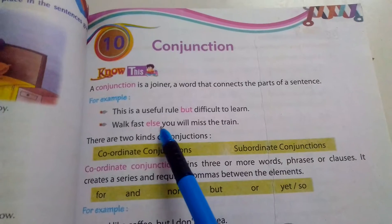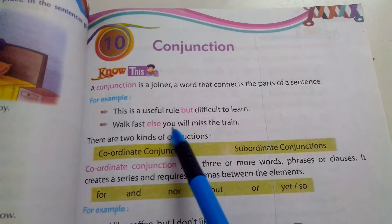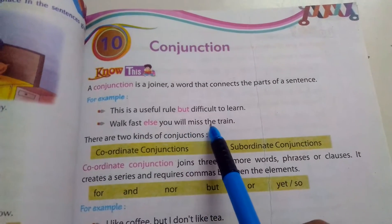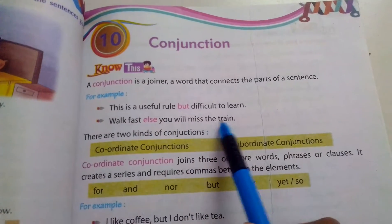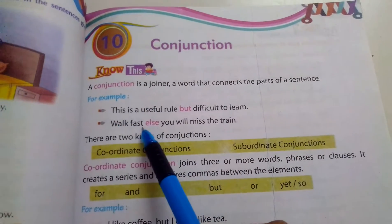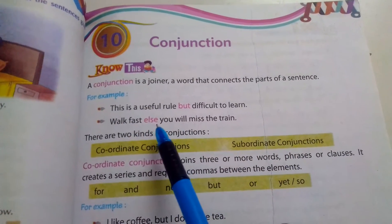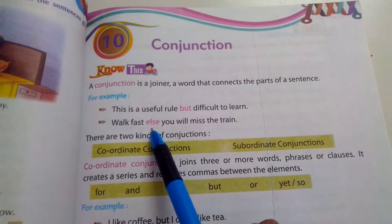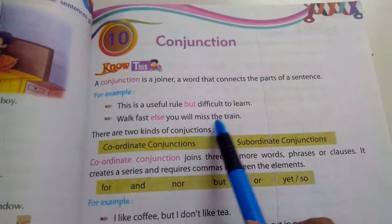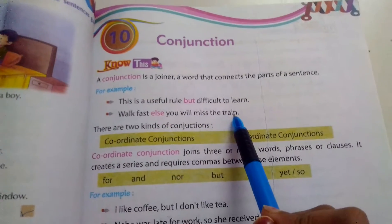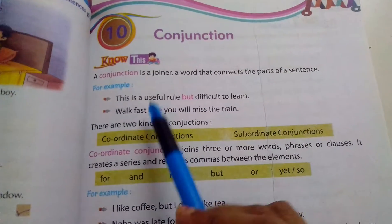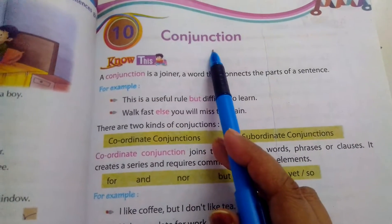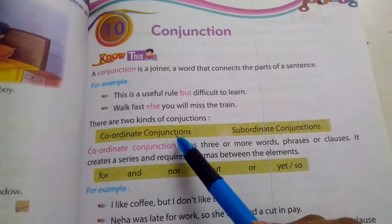Walk fast, else you will miss the train. Jaldi bhaago, nahi toh — 'else' matlab nahi toh — wali train miss ho jayegi. Toh 'else' bhi yahaan par conjunction hai.